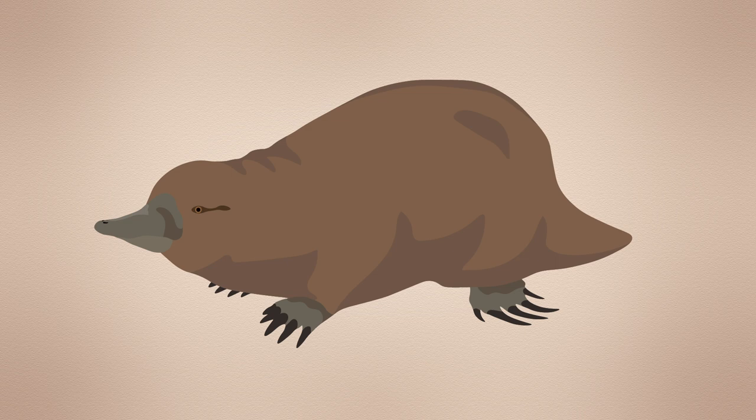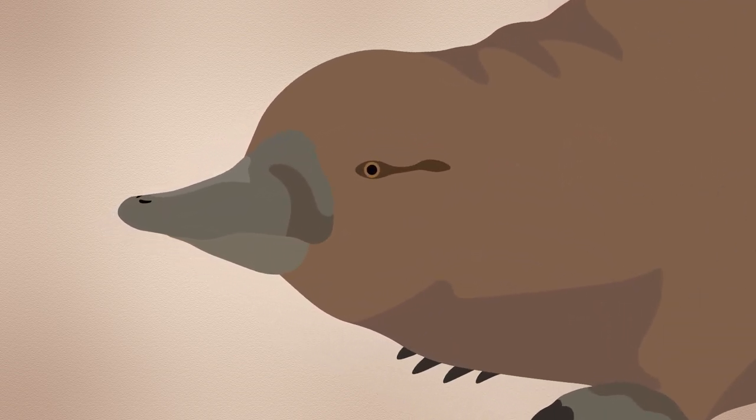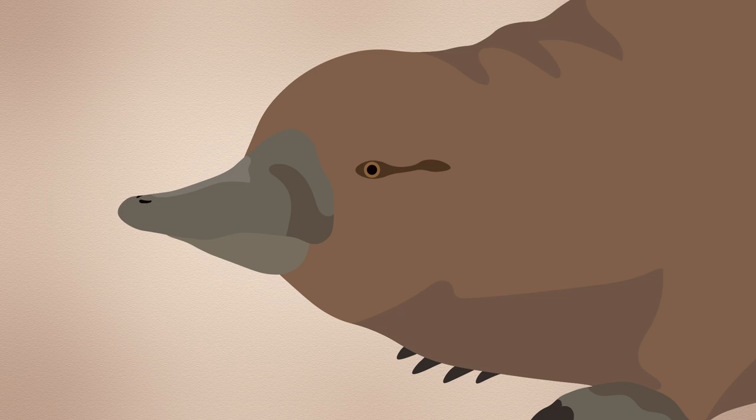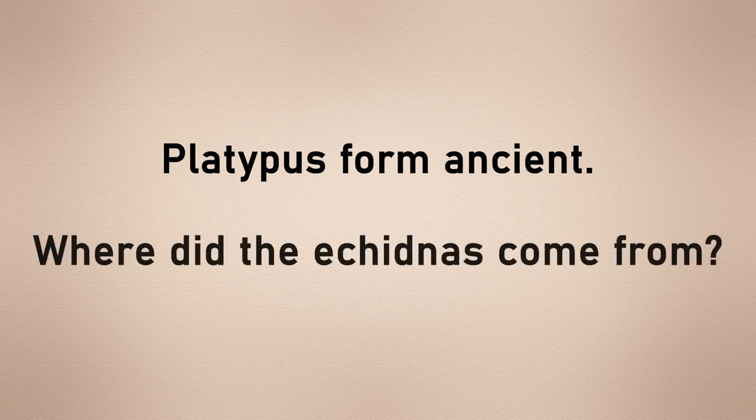Even the earlier Steropodon is thought to have displayed a bill, a face far more similar to that of the platypus than any echidna. So, if the platypus form is ancient, then where did the echidnas come from?